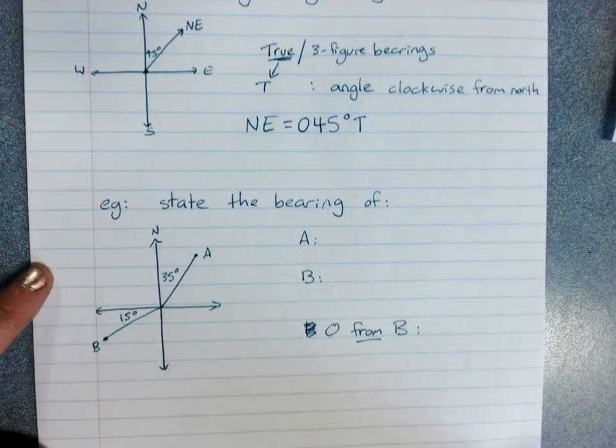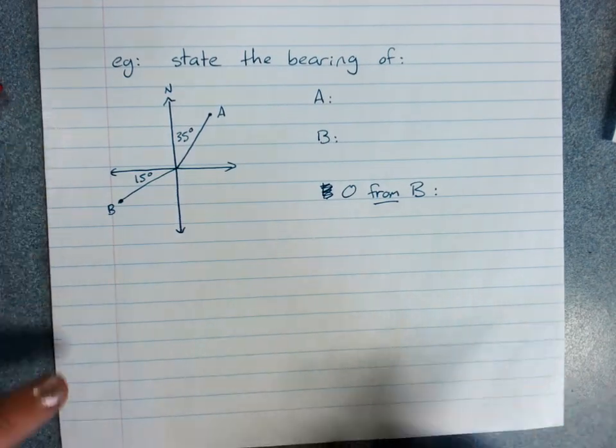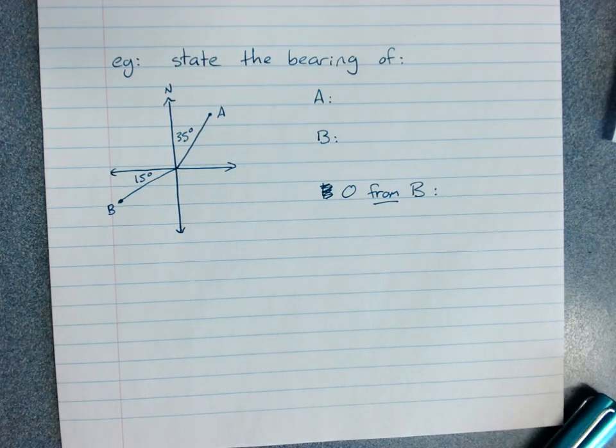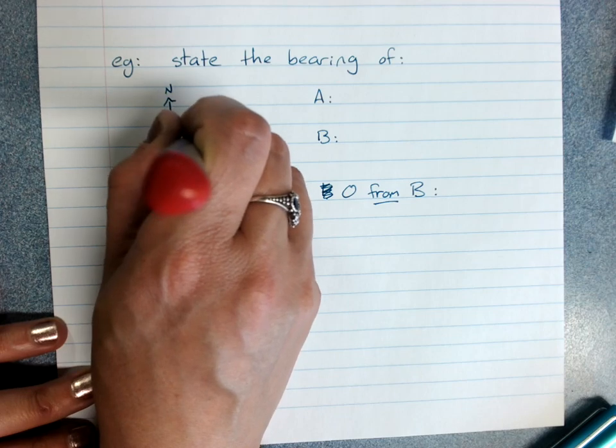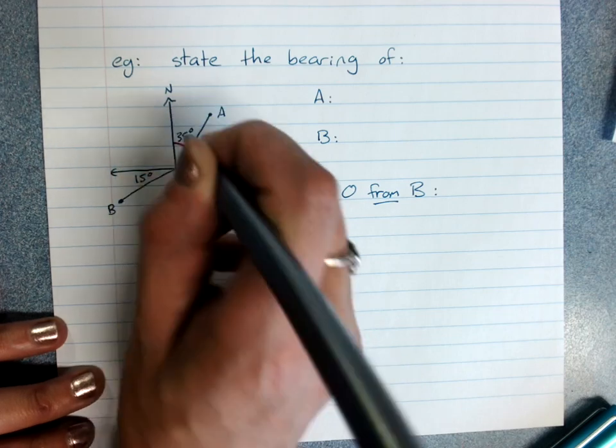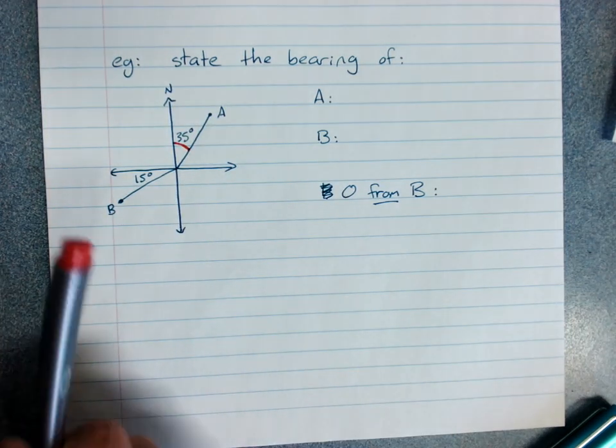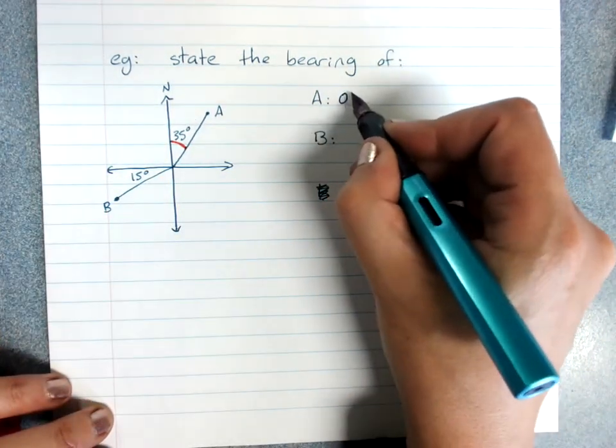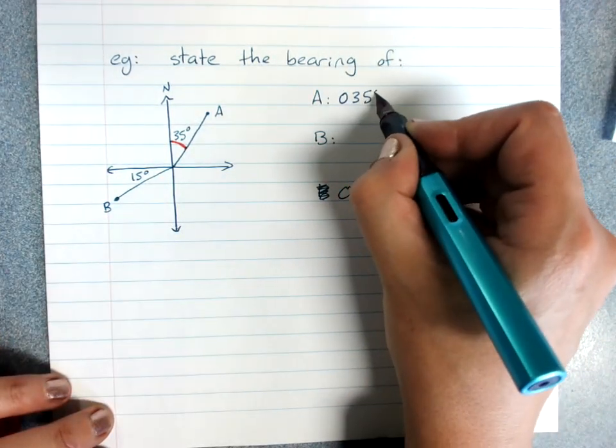When you're asked to state a bearing, stating the bearing of A, it's a really good idea to get in with a pen and draw the angle clockwise from north, because it really helps you work out what we're doing. Now that's just 35 degrees, so A is 035 degrees true.